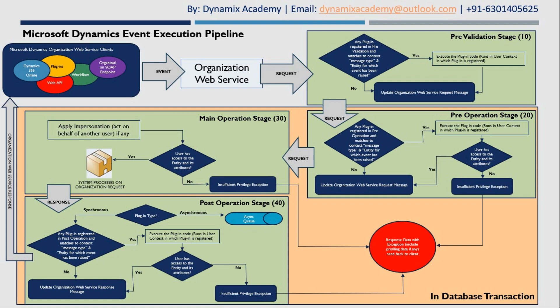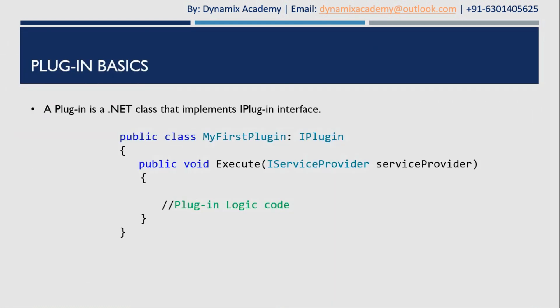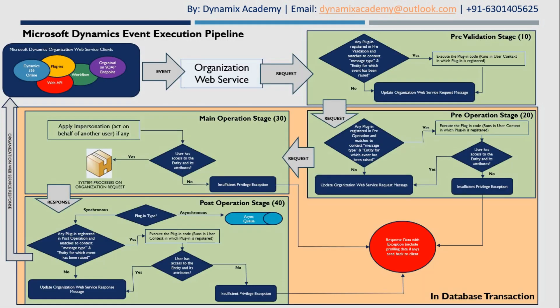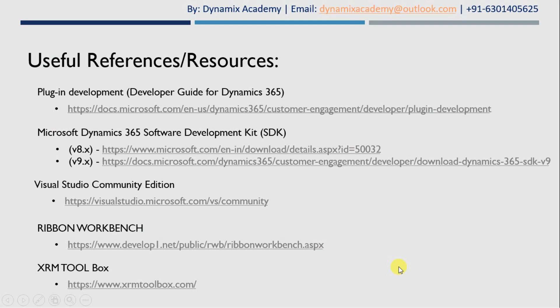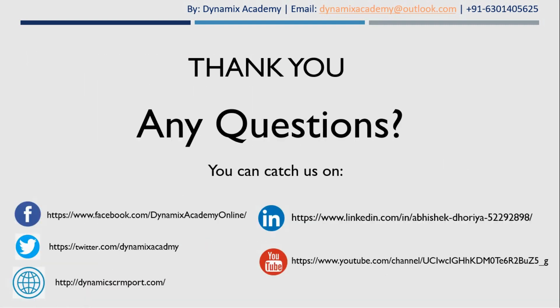This is what happens on the Dynamics 365 server whenever an event has been raised from a Dynamics 365 client. Now you have the complete picture of what an event execution pipeline is and what happens on the server when an event is raised. In our next video we will start with plugin basics theory. You can find the list of useful resources on the given slide. If you have any questions, you can reach us on any of our social media platforms — please subscribe to one of our social media channels.